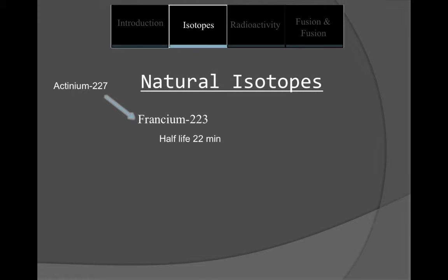Out of 34 isotopes, francium-223 is the most stable isotope with a half-life of 22 minutes.